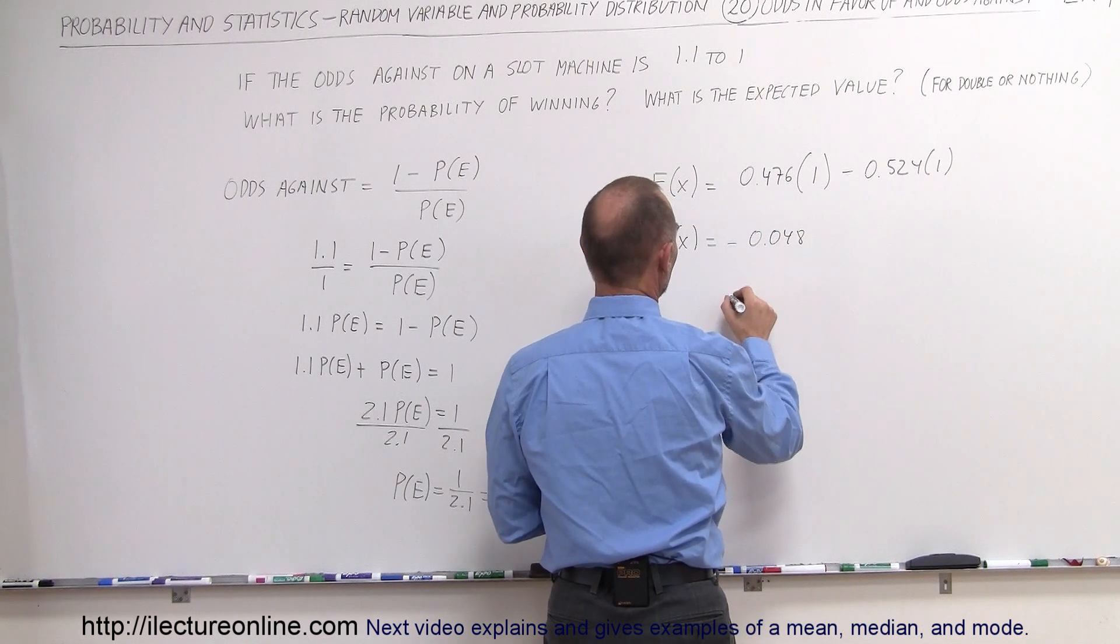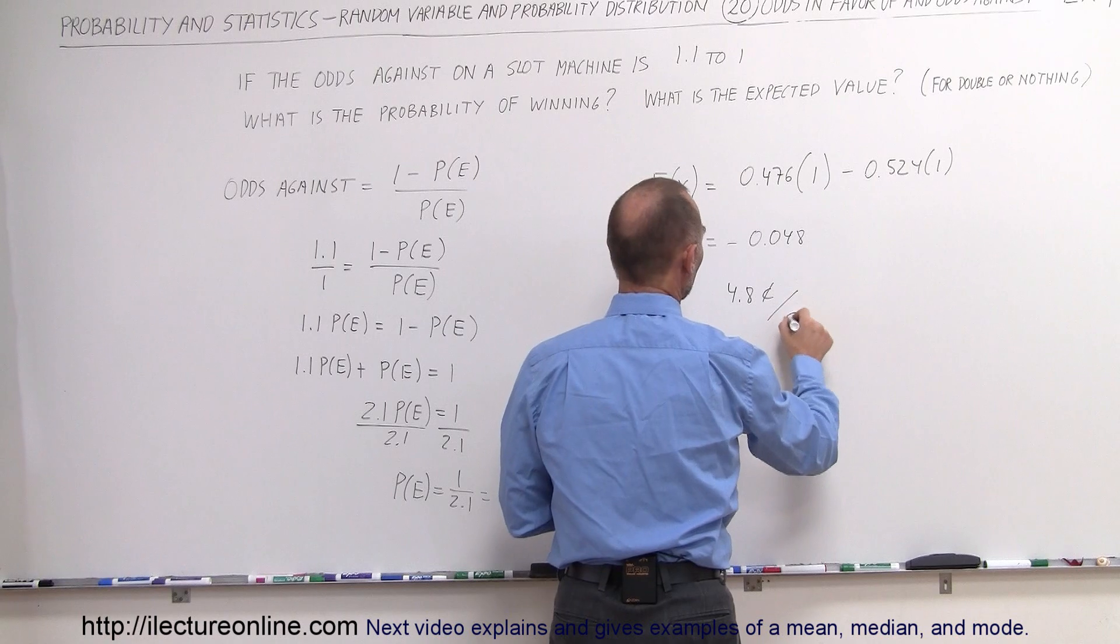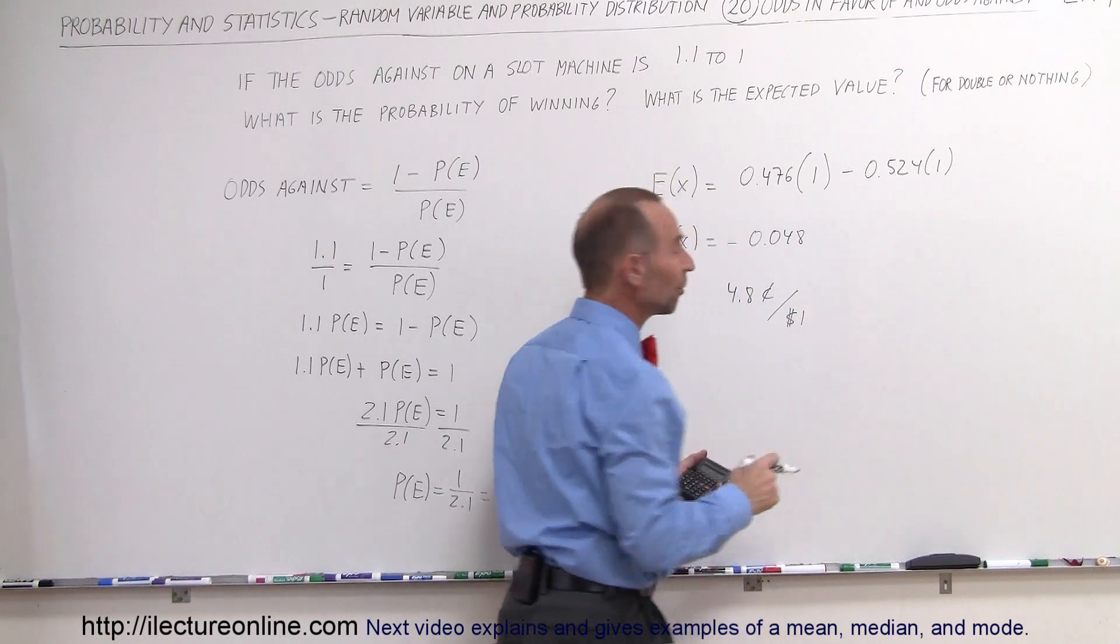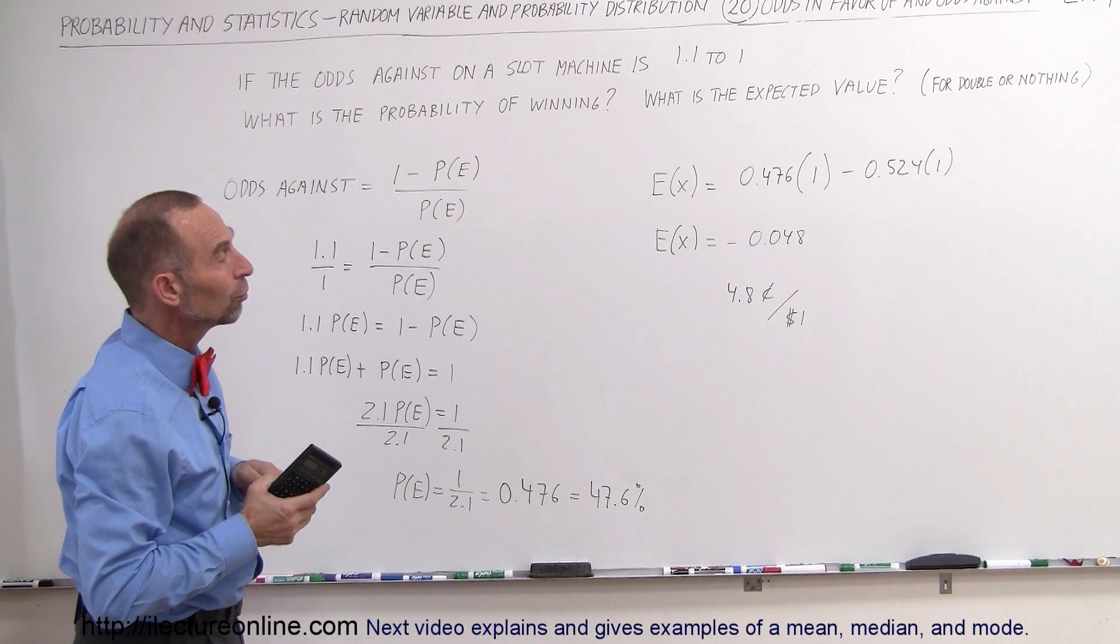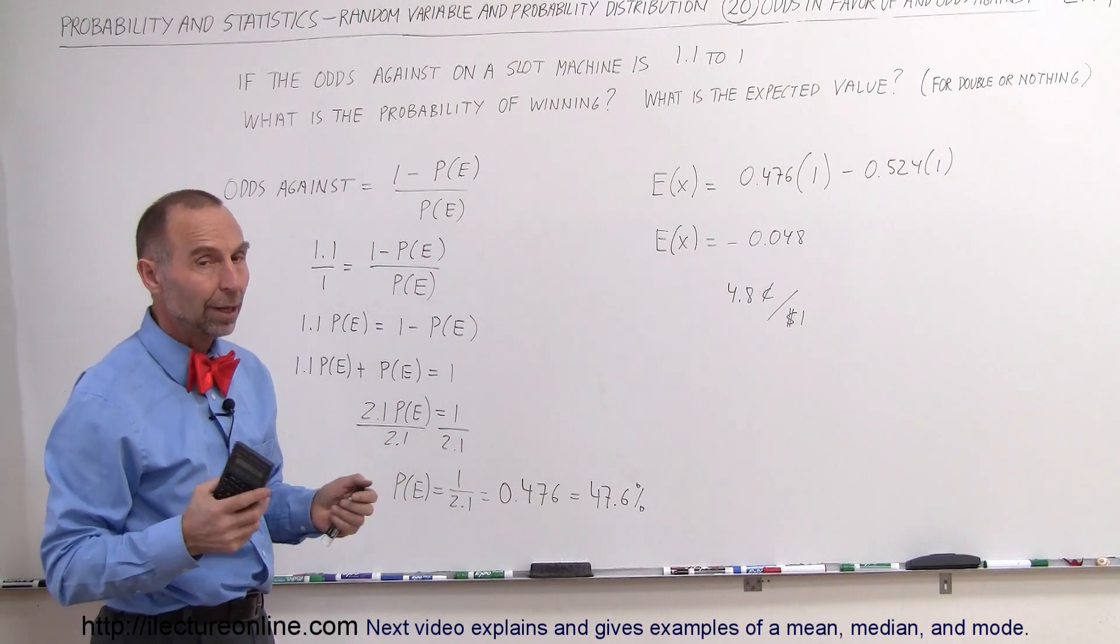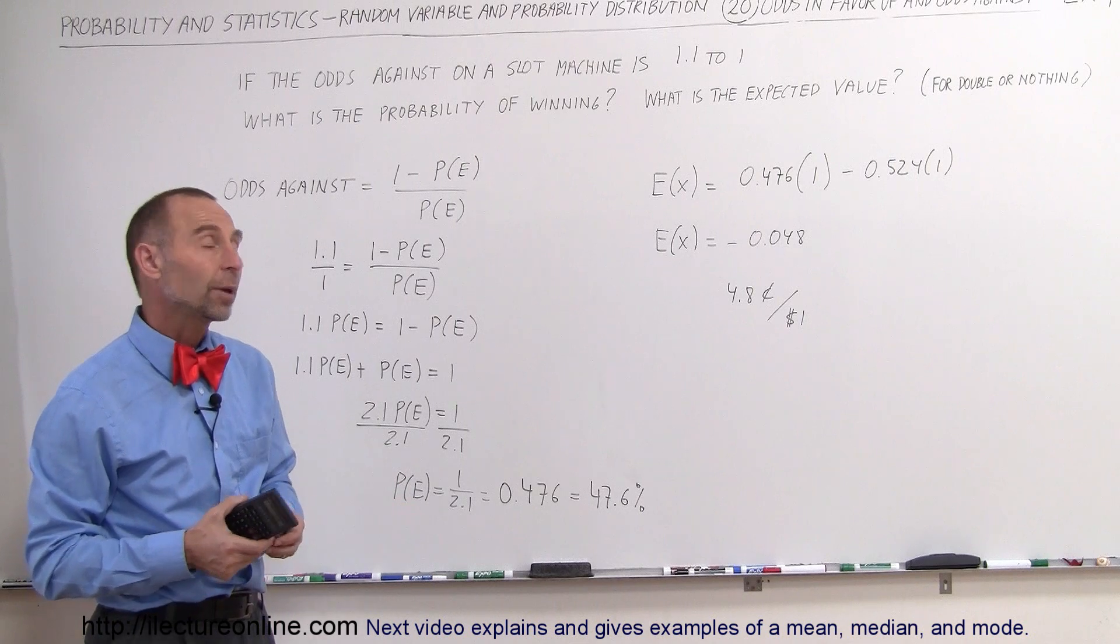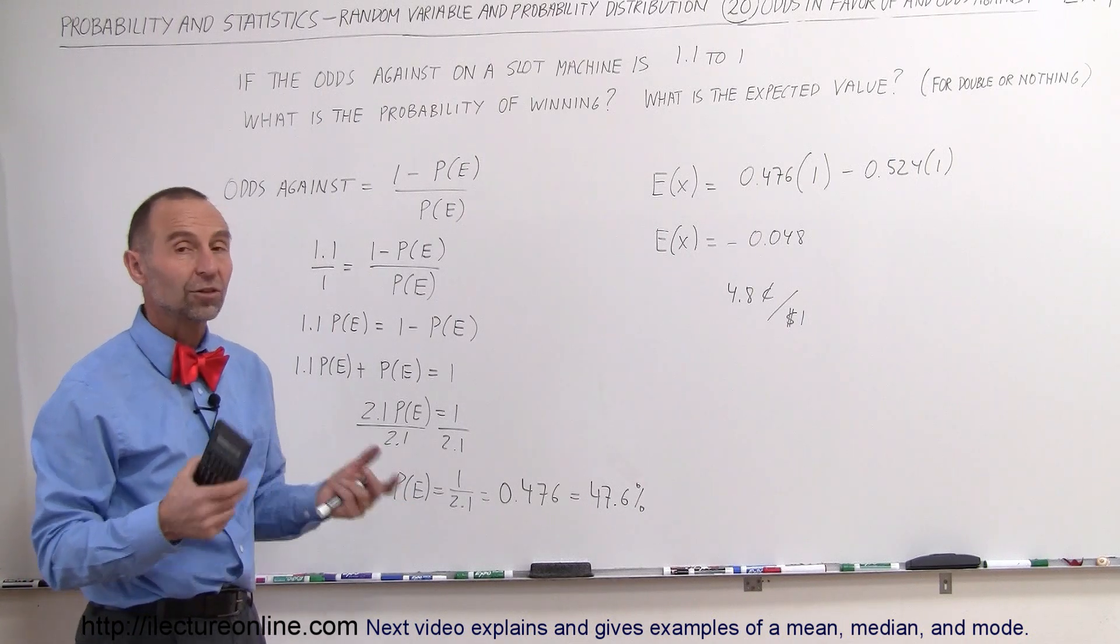So in other words, you'll expect to lose 4.8 cents per dollar invested or per dollar played. So you put in four quarters, you can expect to lose 4.8 cents, a nickel. If you put in $100, you can expect to lose $4.80.